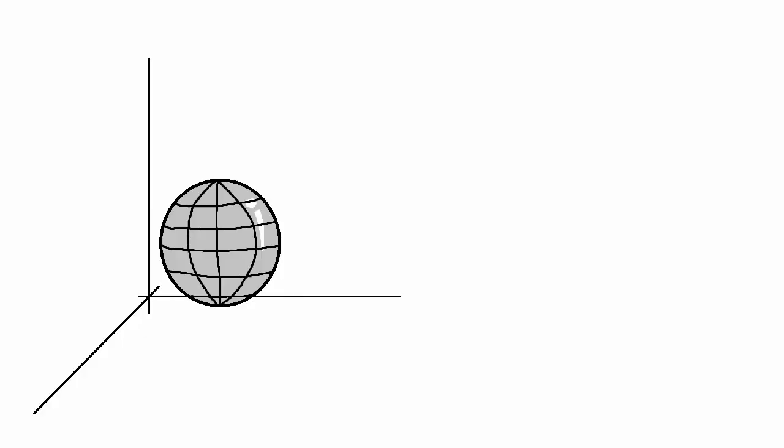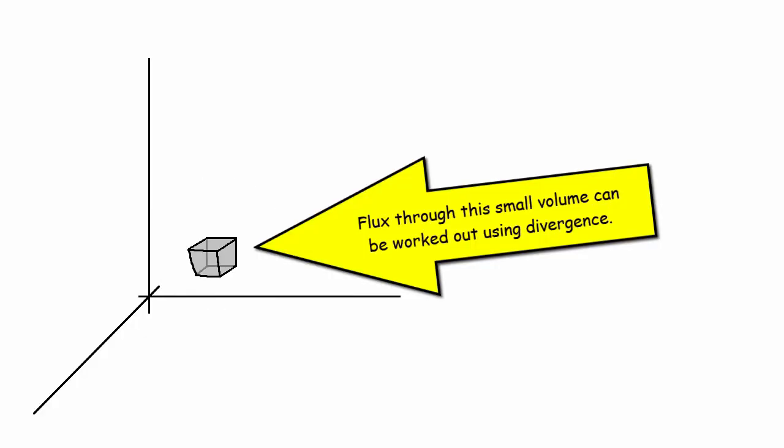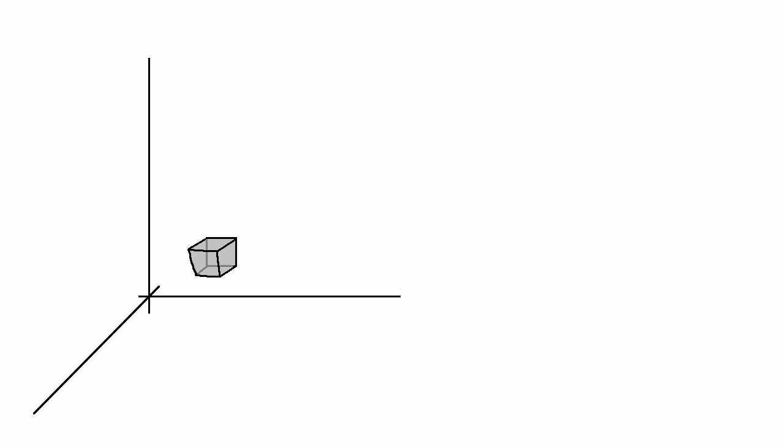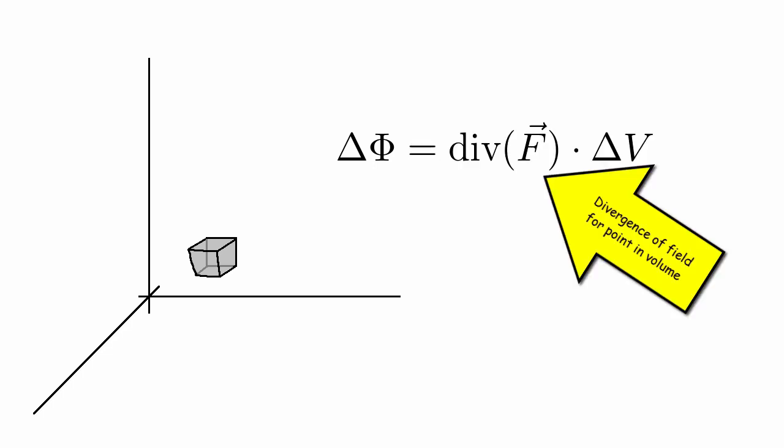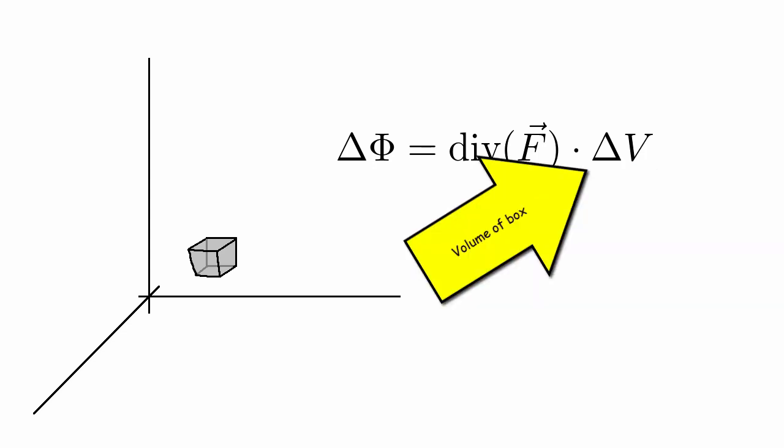And now we know that if we have infinitesimally small volumes, we can work out the flux through these small volumes because that's just basically the divergence. We know that the flux through a small box like this would just be equal to the divergence of the field multiplied by the volume of this small box.